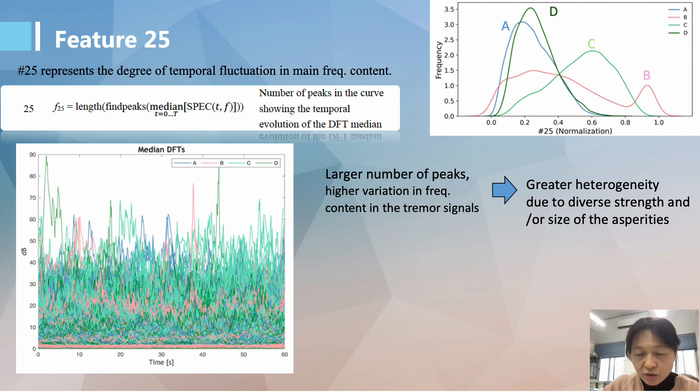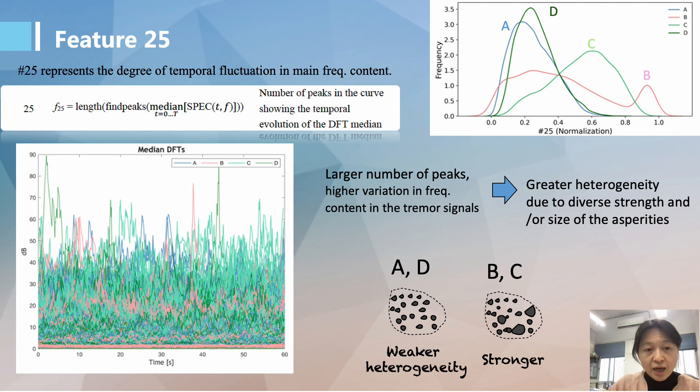Area A and D are with a smaller feature value that may indicate their weaker heterogeneity.